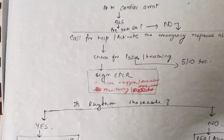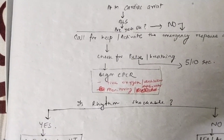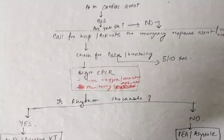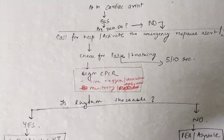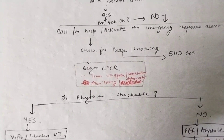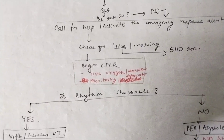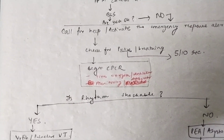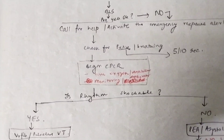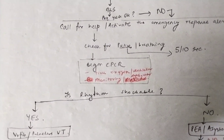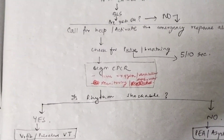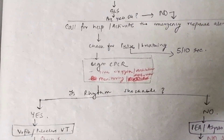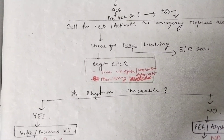How does it start? First, call for help and activate the emergency response alert. Then check the pulse and breaths of the patient: brachial for infants, brachial or carotid for children, carotid for adults. Use a stethoscope to check breathing. Remember, the pulse check must be done for five to ten seconds.